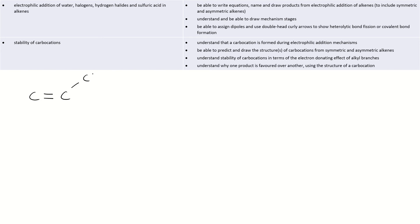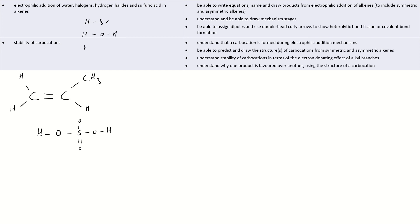Now to look at the asymmetric case. We'll use prop-1-ene and vary it up — we'll use sulfuric acid. Whether you're using water, a hydrogen halide, or sulfuric acid, don't be put off by any of them. Essentially they all boil down to H joined to X, and the mechanism occurs exactly the same for all three.